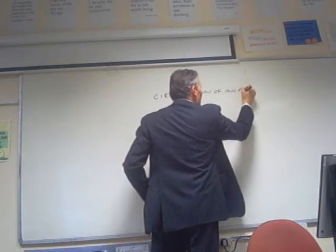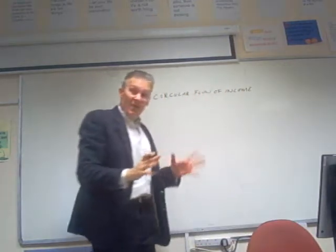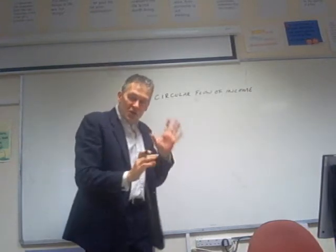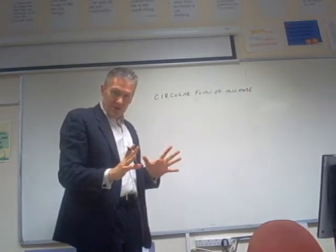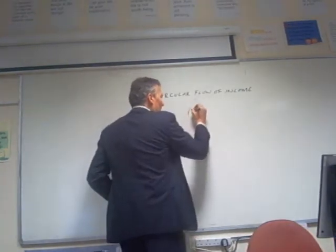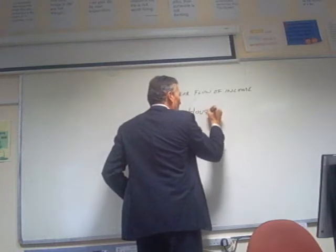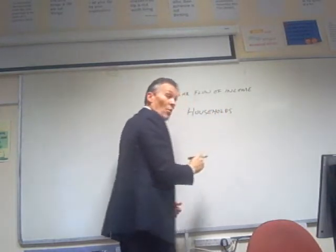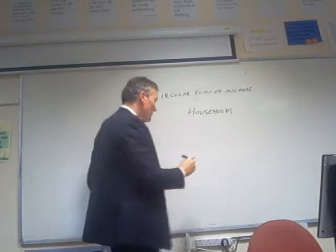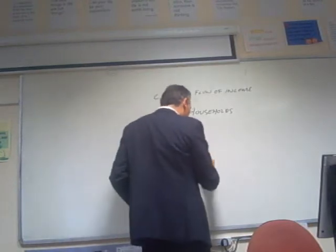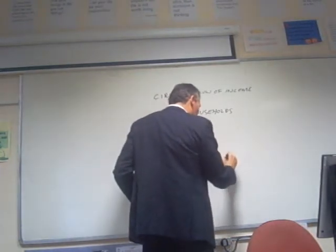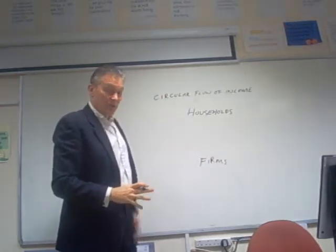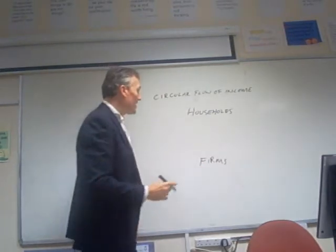We start off with the assumption that this very simple economy — almost like a desert island if you wish — has only two economic players involved. One, we have the households, which constitutes the people, and we have firms, which constitutes the manufacturing process of making something.